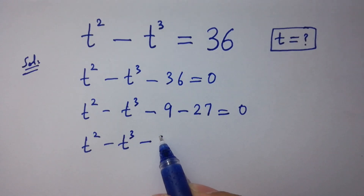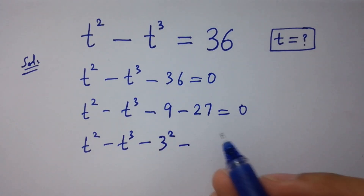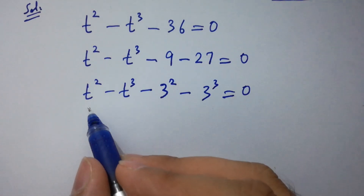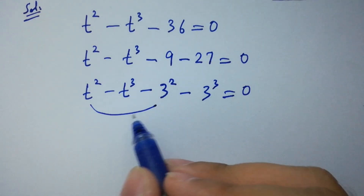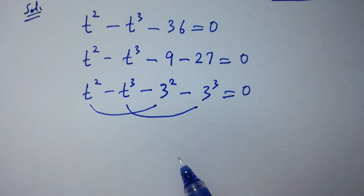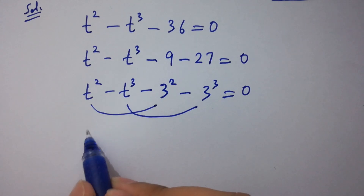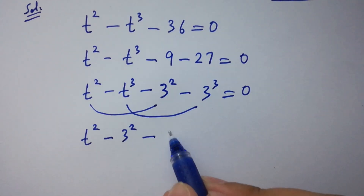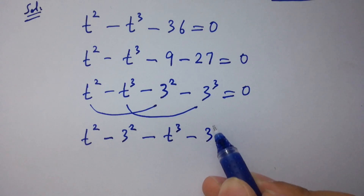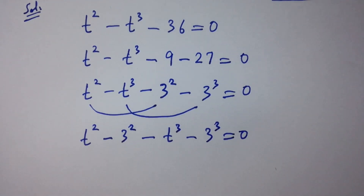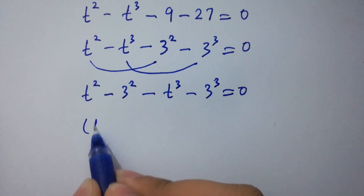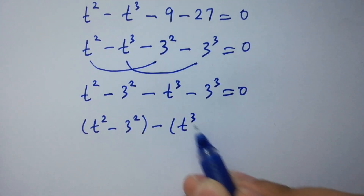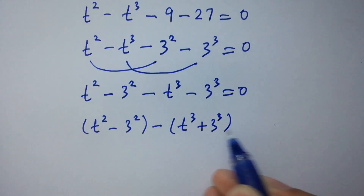t-squared minus t-cubed minus 36 is the same as minus 9 minus 27 equals 0. Here, 9 is the same as 3-squared and 27 is the same as 3-cubed. We can write it as t-squared minus 3-squared minus t-cubed minus 3-cubed equals 0.